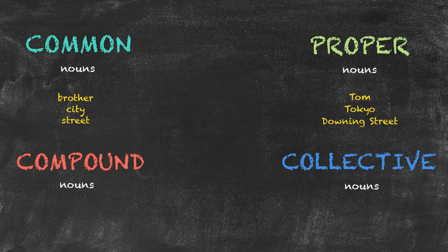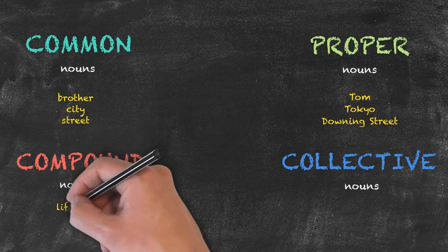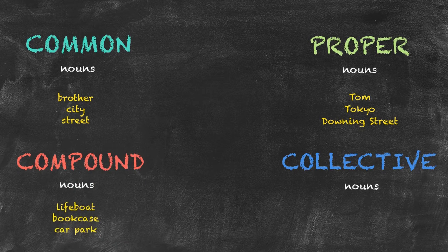We also have our compound nouns. Compound nouns put two nouns together and they're thought of as one. They can be listed as two words, a hyphenated word, or one word, such as lifeboat, bookcase, car park.